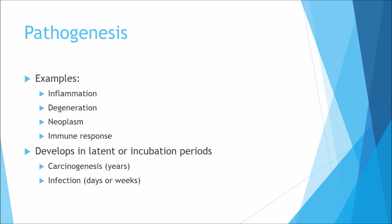Now we're going to talk about pathogenesis. Examples include inflammation, degeneration, neoplasia and immune response — these are some of the ways a disease can manifest itself. The disease can manifest over a period of time: it can be latent or have a short incubation period. Carcinogenesis takes years of acquired mutations to develop, whereas an infection could take only minutes, days or weeks for the microbe to incubate before pathogenesis occurs.